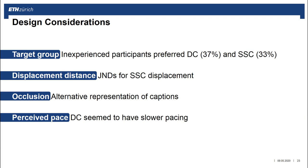What are important considerations for using gaze-adaptive captions? First, the target group plays an important role. We found that inexperienced participants preferred the new methods, while participants who watched videos with captions on a regular basis tended to prefer the method they were accustomed to. We also noticed that the displacement of salient-sensitive captions should not become too big; further experiments are necessary to identify noticeable differences for this parameter. Occlusion of the video content was not as much of a problem as we assumed; however, alternative caption visualizations might help improve the viewing experience. Some participants also noticed that they perceive the pacing of direct captions as slower and more pleasant to watch, and we assume that this might be an effect of our approach to maintain reading consistency.